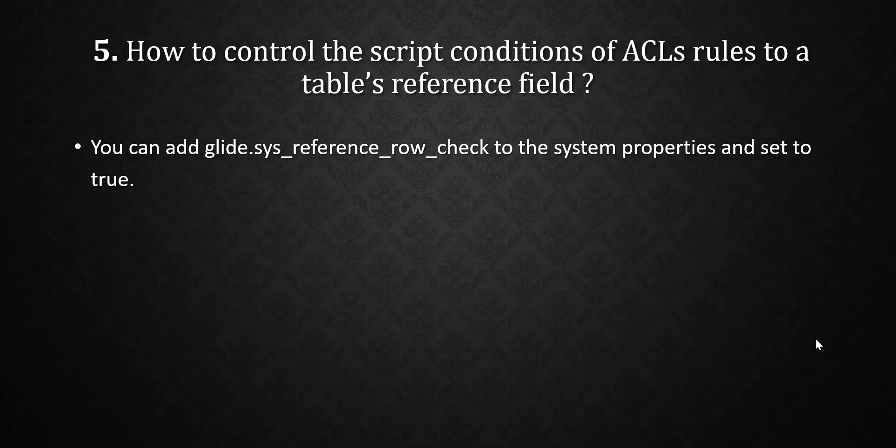Next question: how do you control the script conditions of ACL rules on a table reference field? We can add the property glide.sys_reference_row_check to the system properties and set its value to true. After creating this property and setting it to true, whatever script ACL conditions are created will be applicable on the reference field as well.